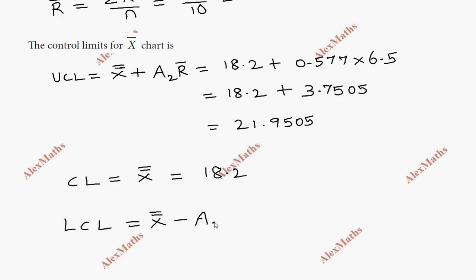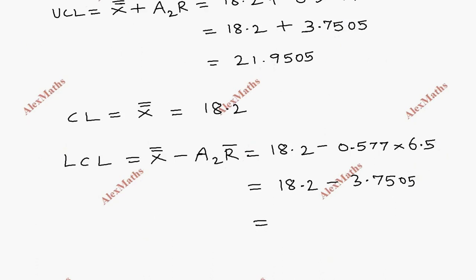The lower control limit is X double bar minus A2 times R bar. So 18.2 minus 0.577 times 6.5. First term is 18.2, this is 3.7505. After subtraction, the value is 14.4495.